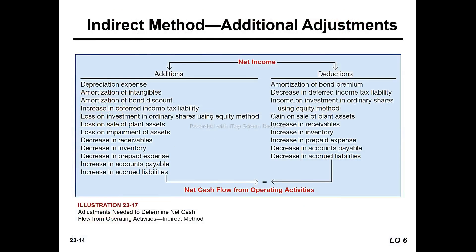If there is a depreciation expense, it is a non-cash expense. In the indirect method, depreciation is added back to net income because no cash was paid for it. Similarly, amortization of bond discount or premium is also a non-cash adjustment added back when computing net cash flow from operating activities.